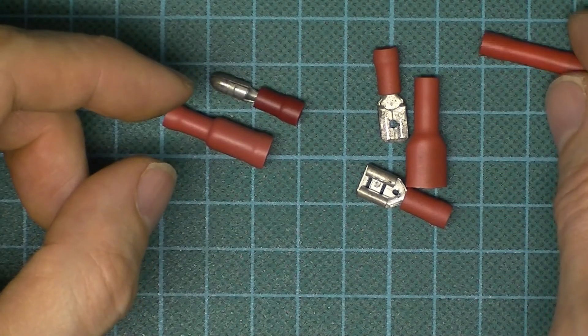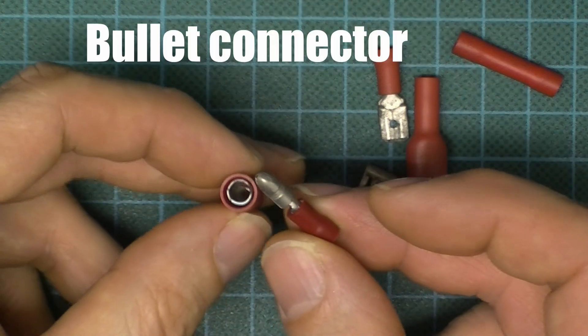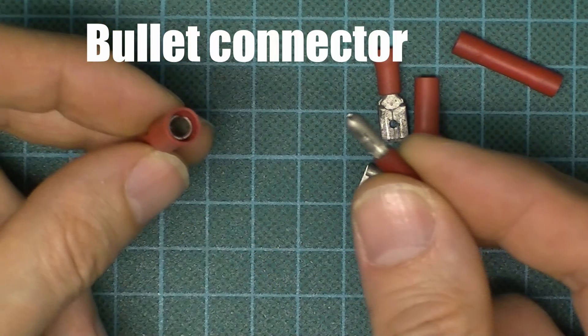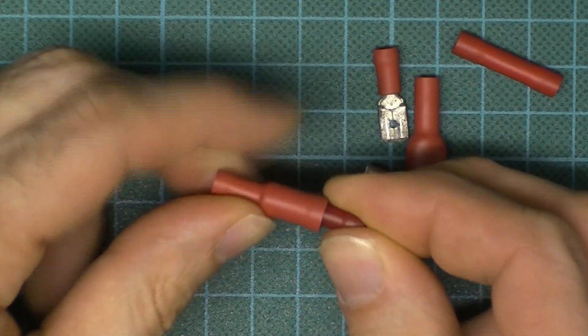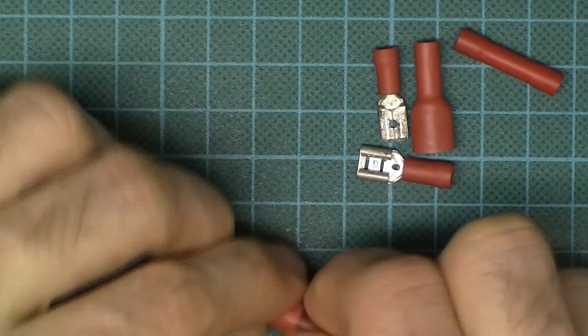So that's a butt splice. Now the alternative might be to use a bullet connector. This would then allow you to separate the two wires, so you've got a male end and a female end. The male goes into the female, hence the name, and then you have the wires crimped into each end.